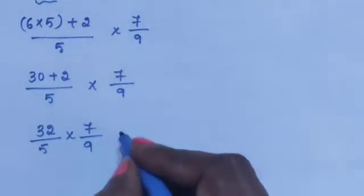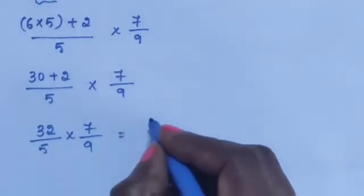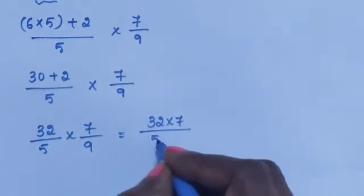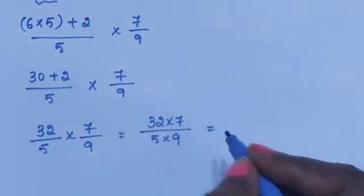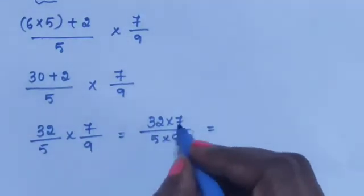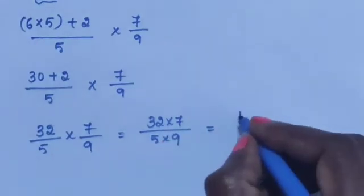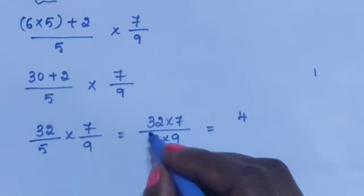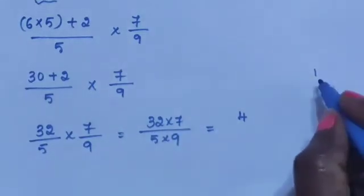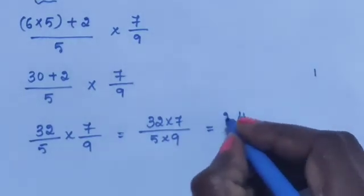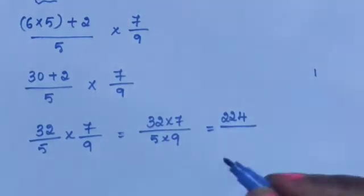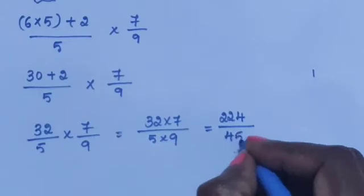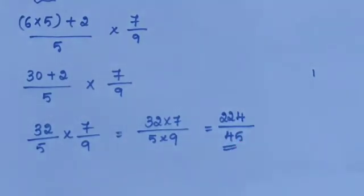32 divided by 5 into 7/9. Multiply the two fractions: 32 into 7 divided by 5 into 9. 7 × 2 = 14, carry 1; 7 × 3 = 21, plus 1 = 22. So 224 divided by 45 is the answer.